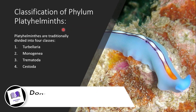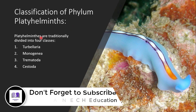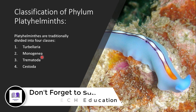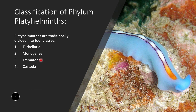Platyhelminthes are traditionally divided into four different classes: number one is class Turbellaria, second is Monogenea, third is class Trematoda, and the last one is class Cestoda.